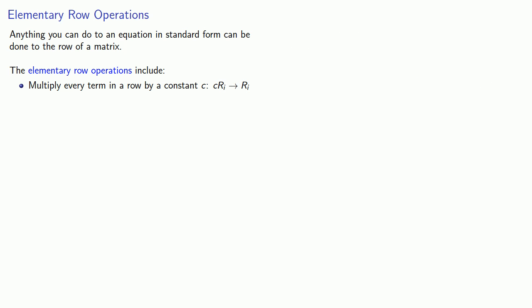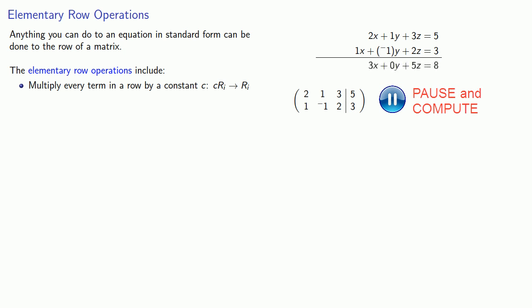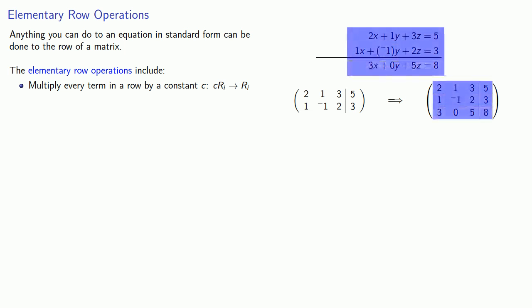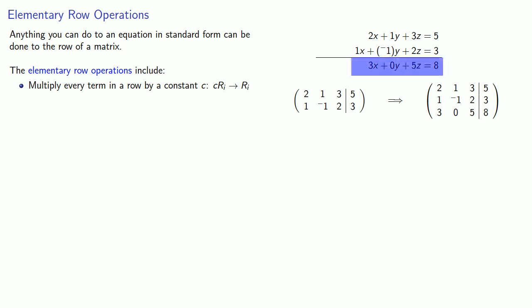Another thing we can do with a system of equations in standard form is add one equation to another. Taking our equations and their corresponding augmented coefficient matrix, we add the two equations together. Every row of the augmented coefficient matrix corresponds to the coefficients and constant of an equation. Strictly speaking, we now have a system of three equations and should have a coefficient matrix with three rows. But we got this third equation by adding the first two together, which means we don't actually need all of the equations, since we can recover one from the other two.